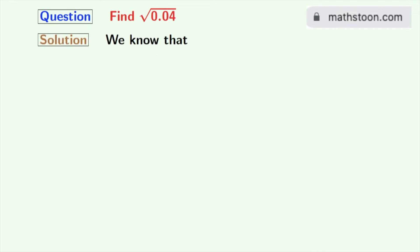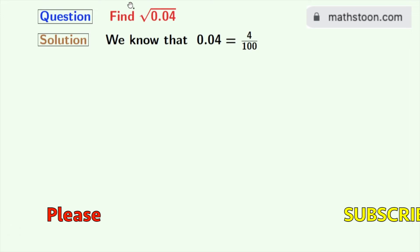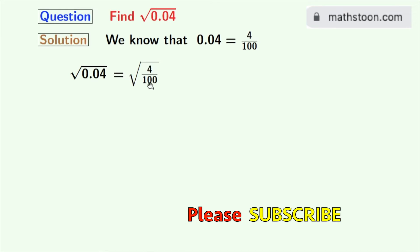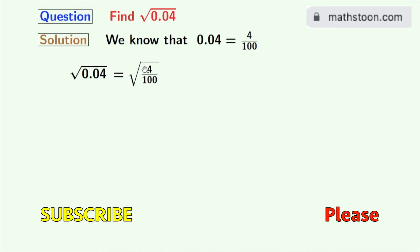Let's start. Firstly, we will express this decimal number as a fraction. So we can write 0.04 is equal to 4 by 100. Now taking square root on both sides, we get square root of 0.04 is equal to square root of 4 by 100.